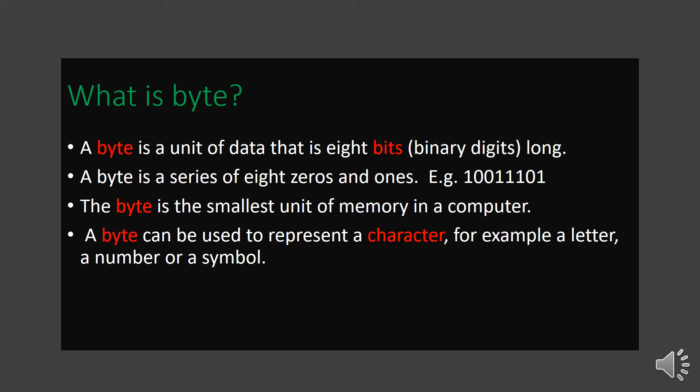Zero represents off and 1 represents on. The byte is the smallest unit of memory in a computer. A byte can be used to represent a character — for example, a letter, a number, or a symbol. We will see how we can use the byte to measure the amount of information that can be stored in a storage device.